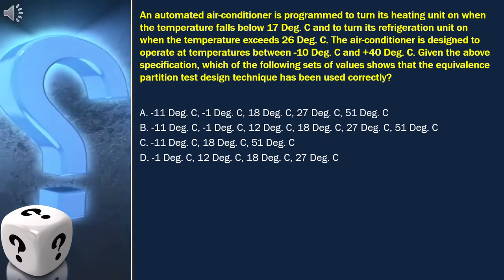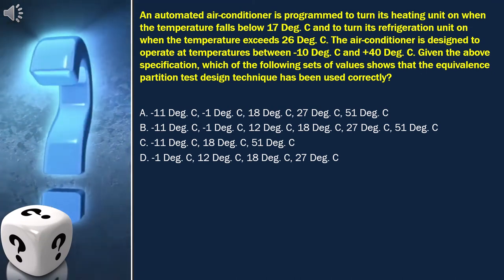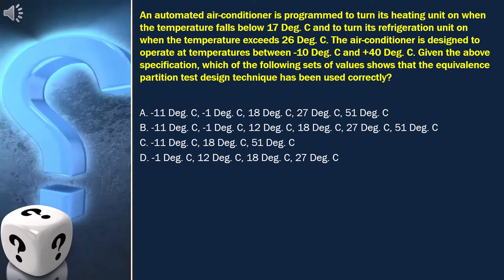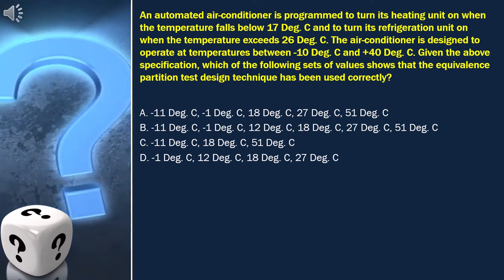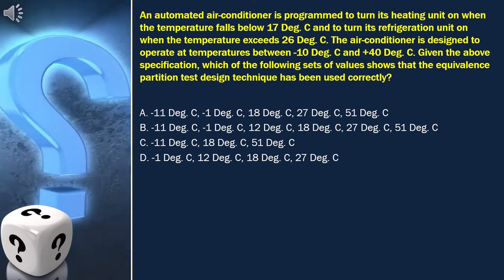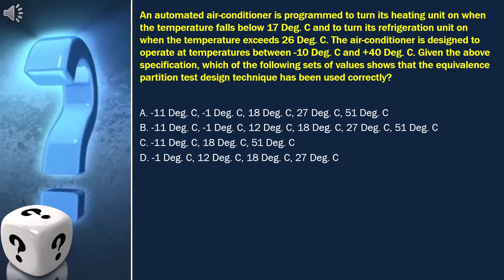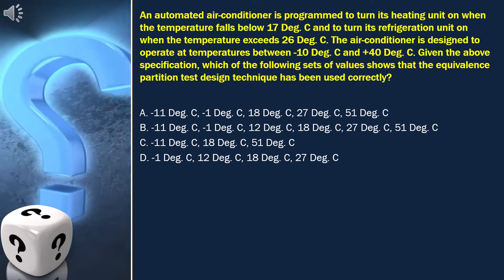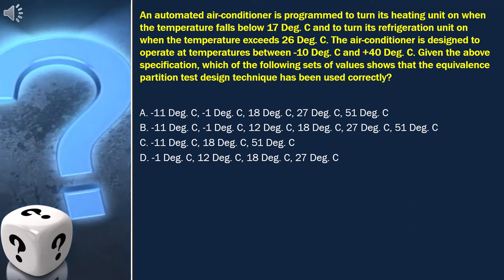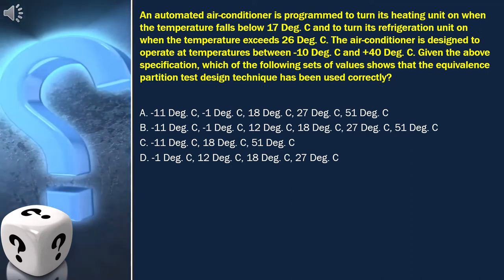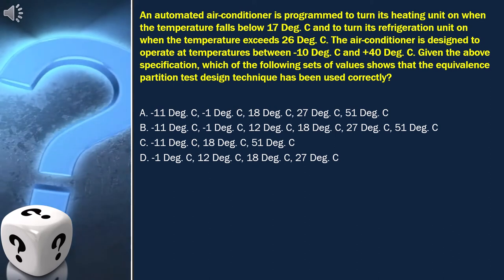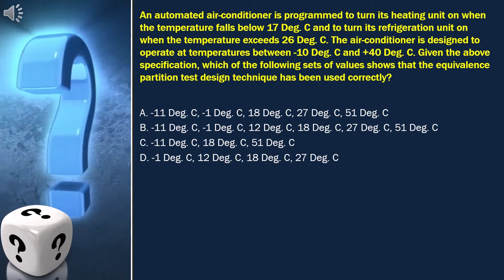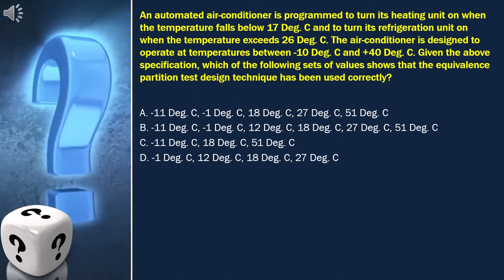Here, the question is: An automated air conditioner is programmed to turn its heating unit on when the temperature falls below 17 degrees Celsius and to turn its refrigeration unit on when the temperature exceeds 26 degrees Celsius. The air conditioner is designed to operate at temperatures between minus 10 degrees Celsius and plus 40 degrees Celsius.